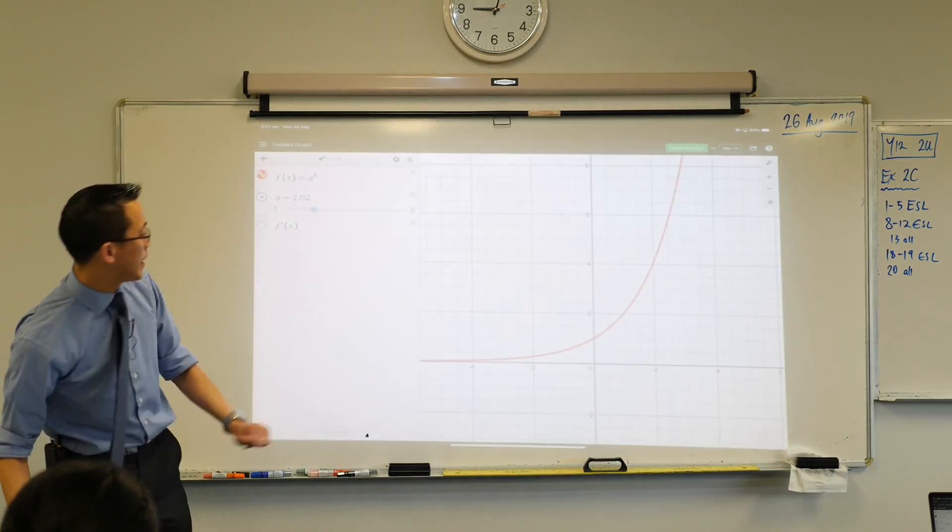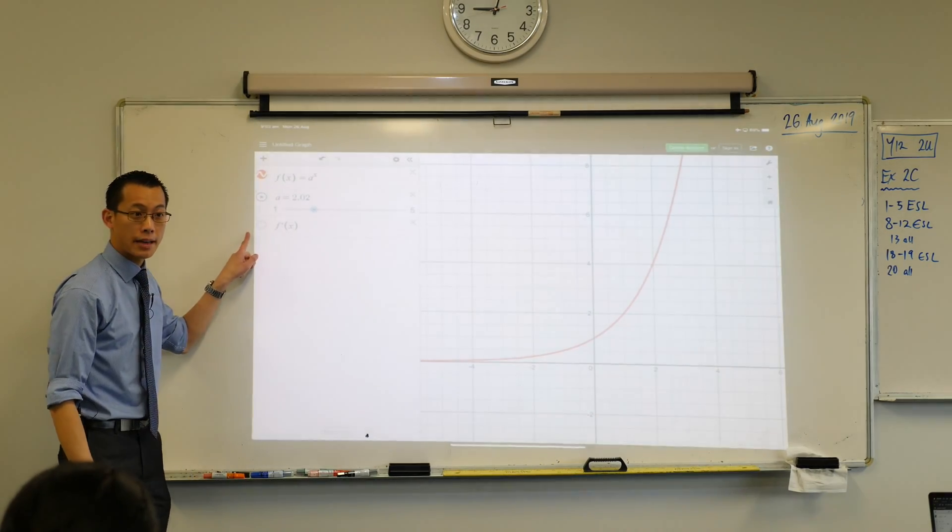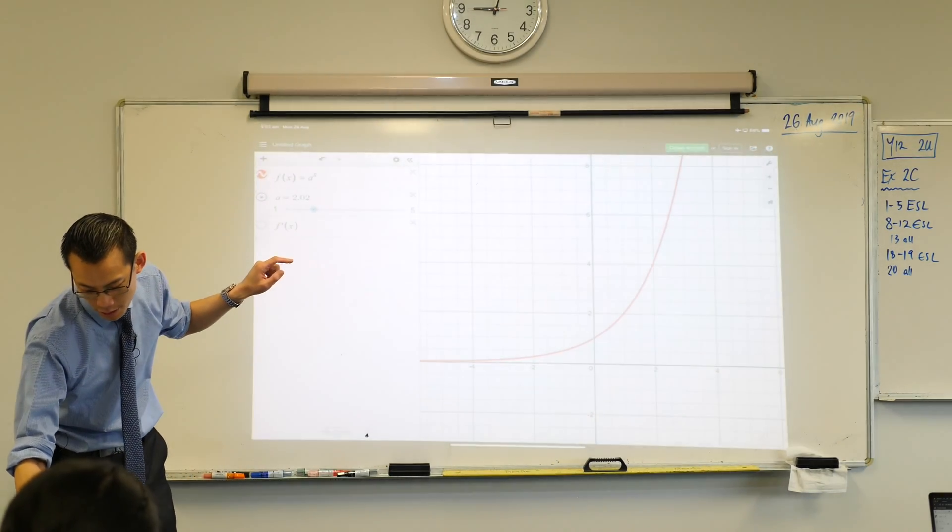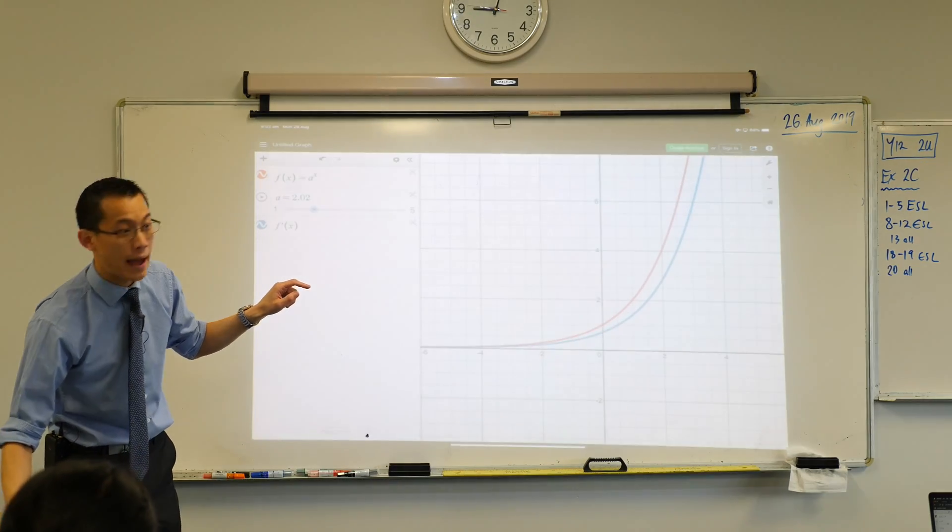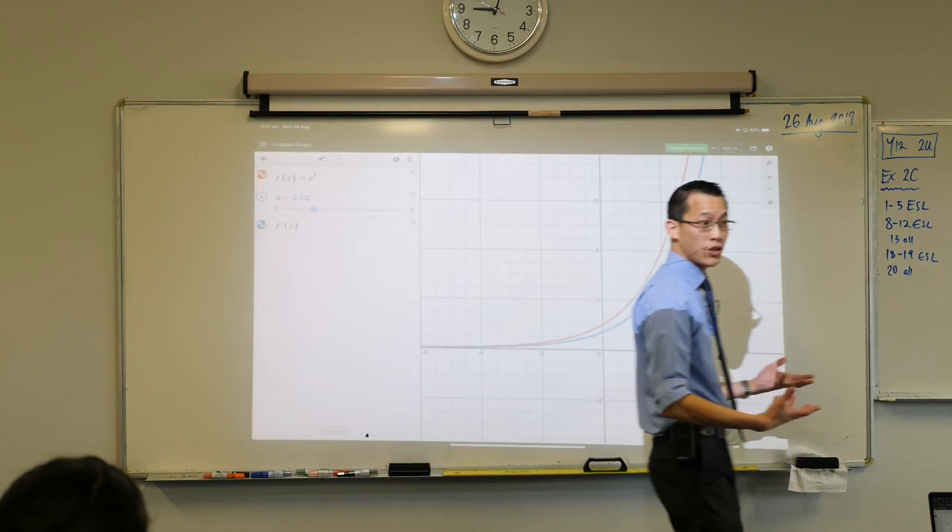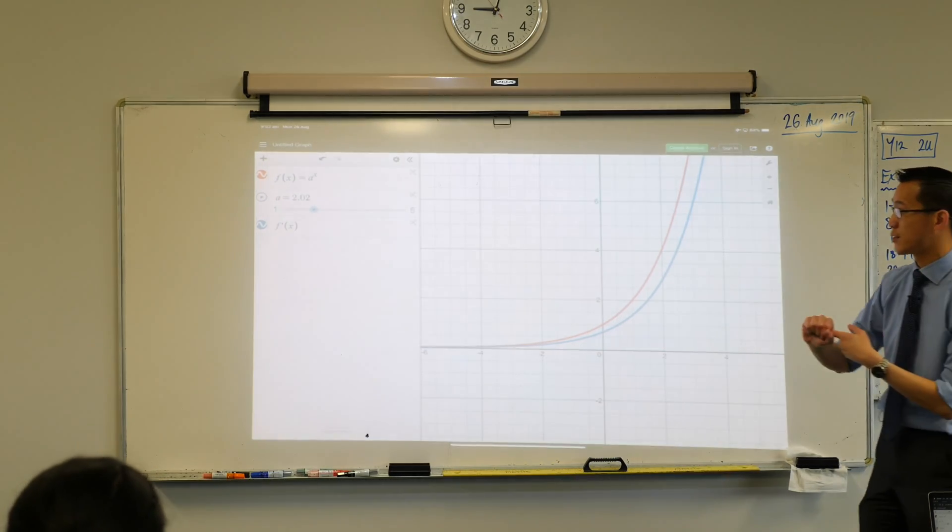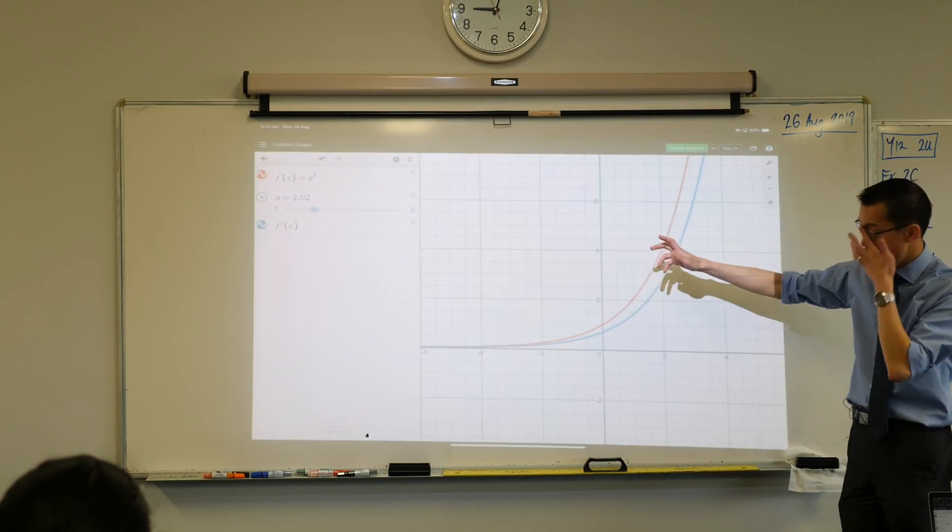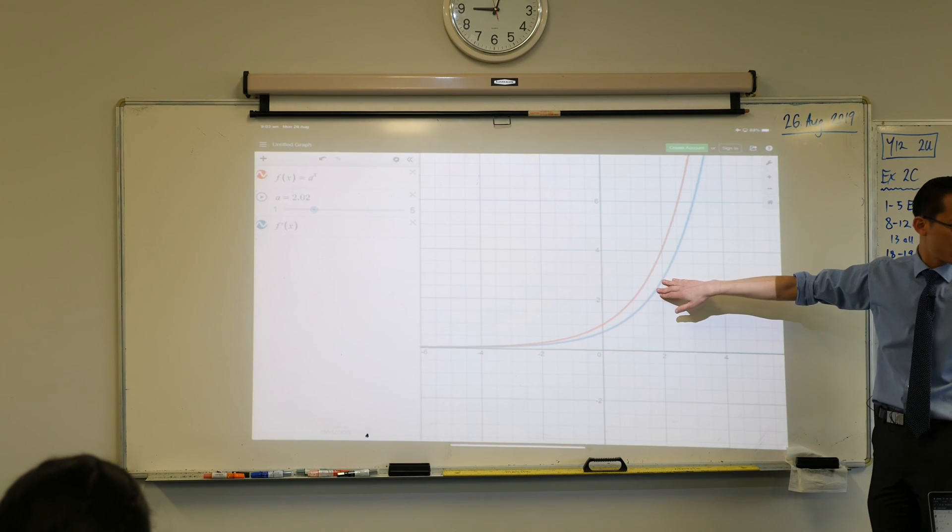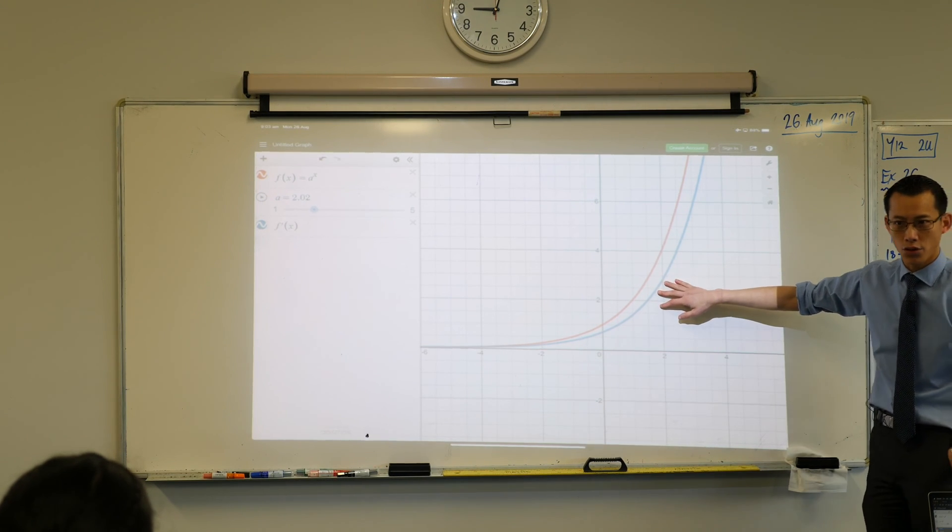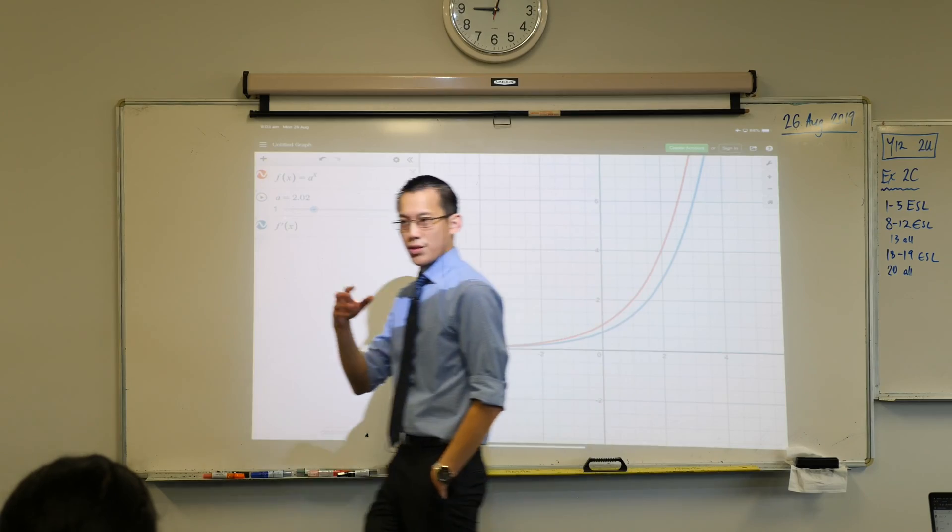All right. Now, what we all did was we hid this derivative function. Do you remember that? Okay. Can you make it reappear? Just hit that circle and that blue graph will come back. Okay. Do you have this? Is this what you've got? You got the two there? Okay. So we've got our red graph, which is two to the power of x, roughly. And then you've got this derivative, which is just beneath it. Do you see that? So far, so good. Okay.